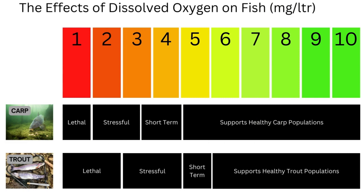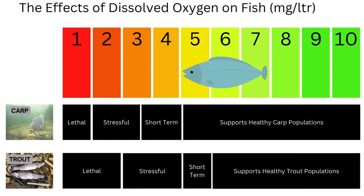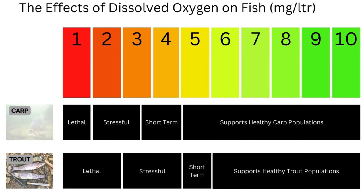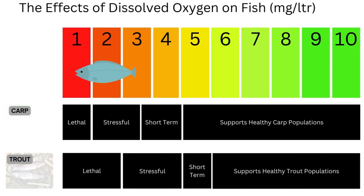At the other end of the scale, carp and tench could be more tolerant of low dissolved oxygen. Although levels should ideally be above 5mg per litre, they can tolerate levels below 2mg per litre, and even survive at levels below 1mg per litre.